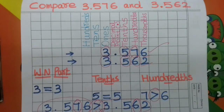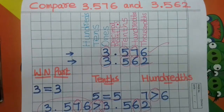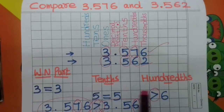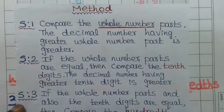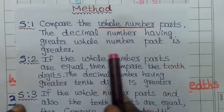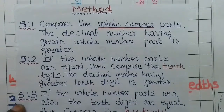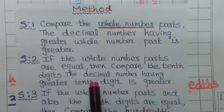In the last few videos, we compared two decimal numbers using greater than, less than, or equal to. When comparing two decimal numbers, follow four steps. First step: compare the whole number part. If it is greater, that decimal number is the answer. If it is equal, go to step 2.